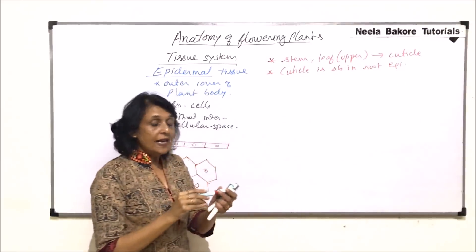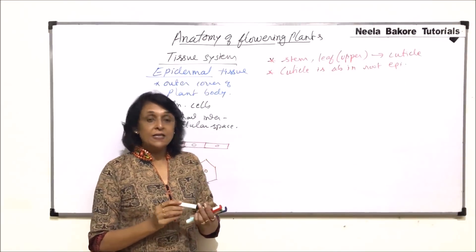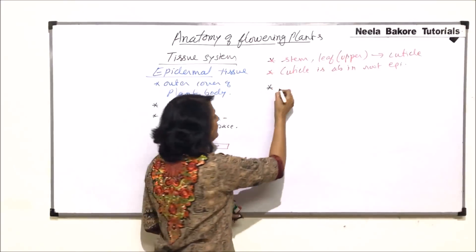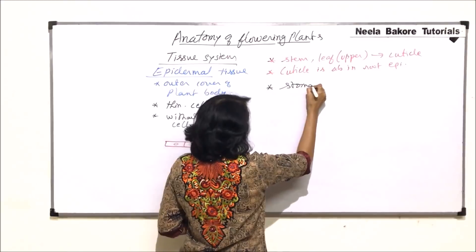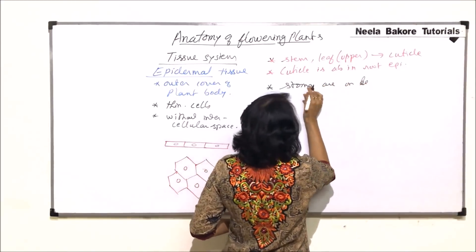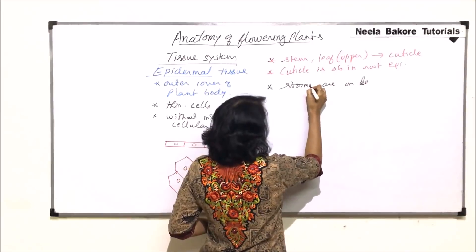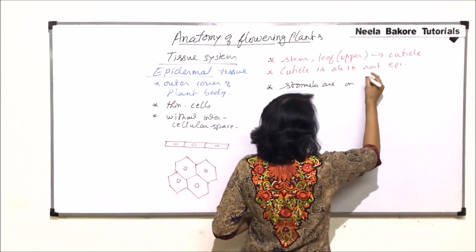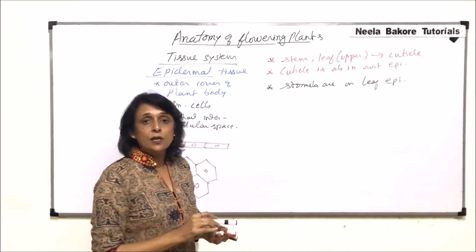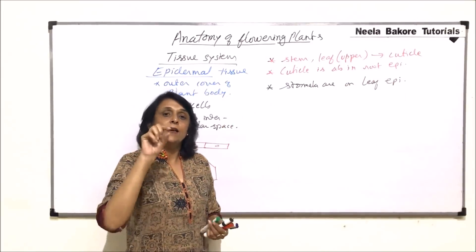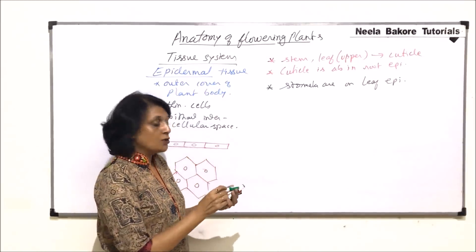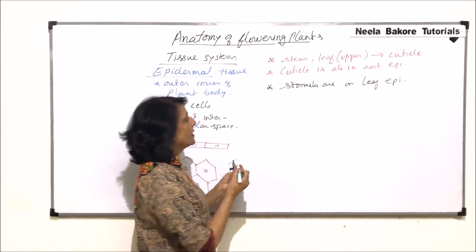On the leaf, the epidermis has certain openings in the form of stomata. Stomata are on leaf epidermis. These are tiny apertures which are guarded by two guard cells. Let us talk about the structure of stomata first.